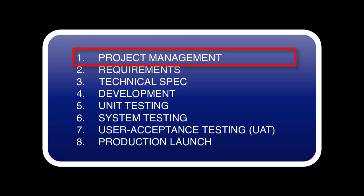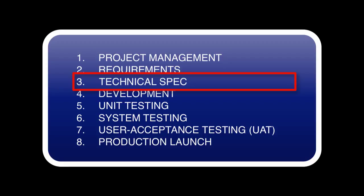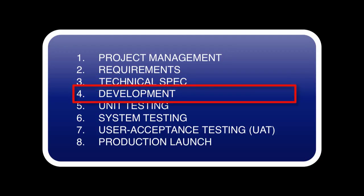We're going to talk about eight stages today. Starting with project management, where the tech team names a project manager. Second stage is requirements, where the business lays out all of the things they need to do. Then the tech spec, where the tech team translates the requirements into a technical spec. Then the fourth stage, where the tech team takes that technical spec and starts developing or configuring the code.